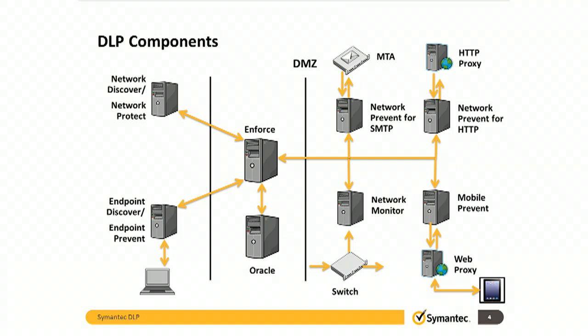Note that these servers do not have to be in the DMZ. With all of these components, the only requirement is that the data is sent to the server. They are designed to catch traffic on the way out of a corporate network. Looking at the arrows, we can see that all communication makes its way back to the Enforce platform, the brains of the operation. Next, we'll review the process and workflow for each of the individual segments of the data loss prevention solution.